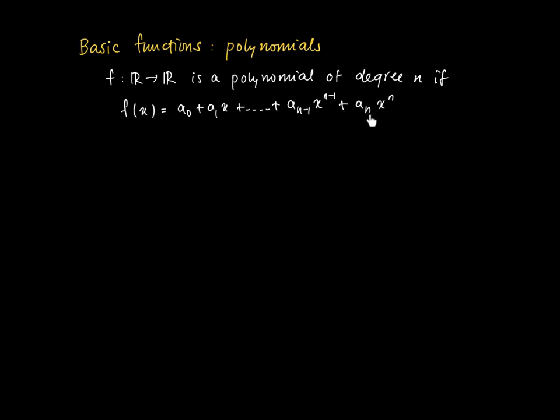The important thing is that this final coefficient a_n is not equal to 0. These are all coefficients for the unknown x, and the final coefficient a_n must be nonzero.